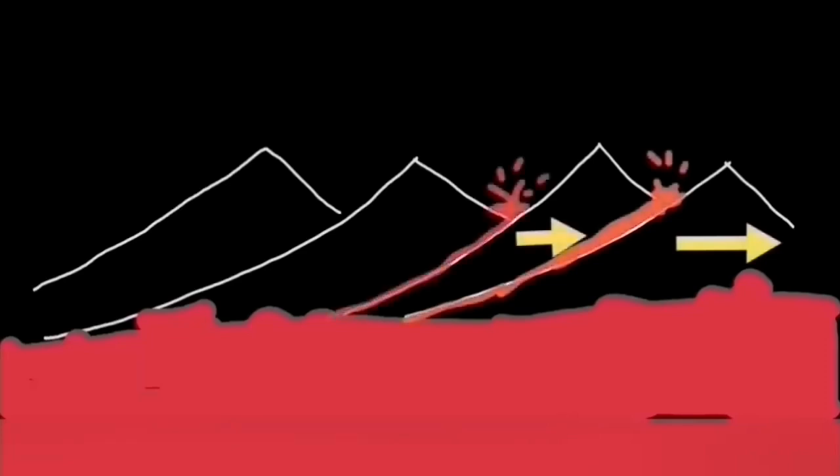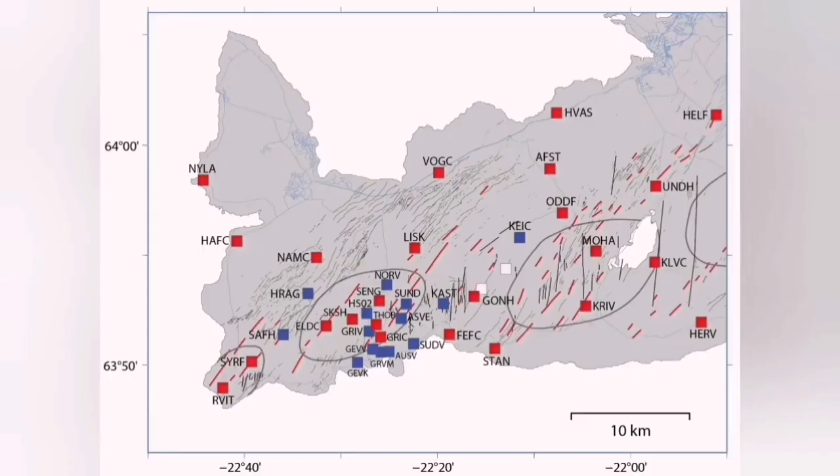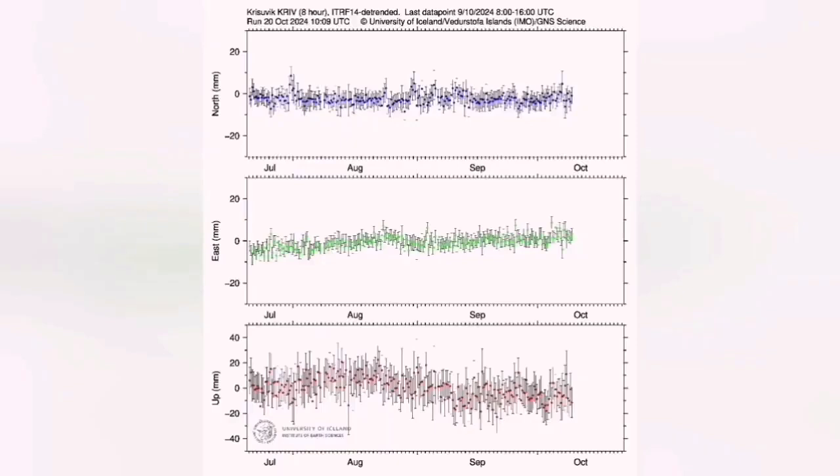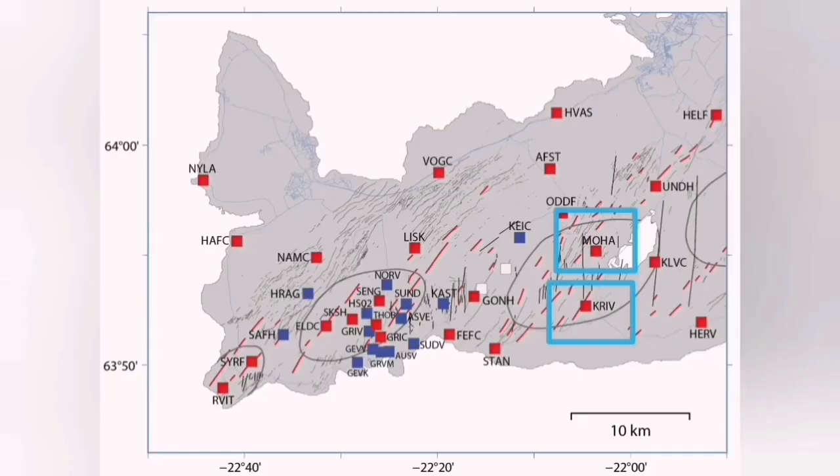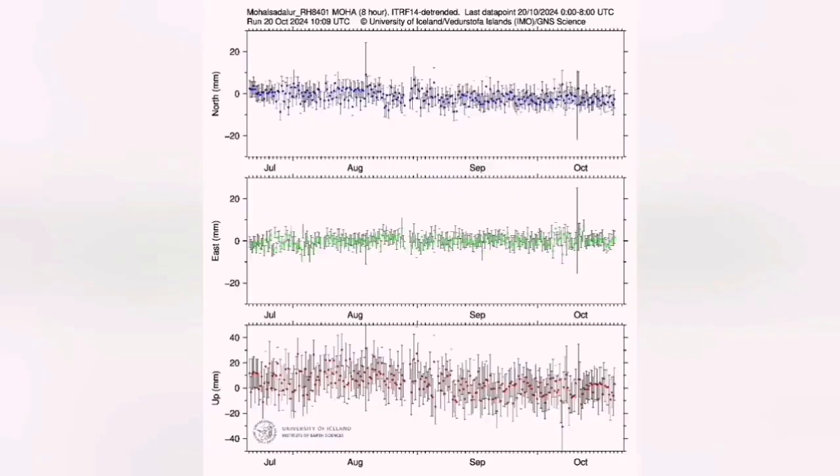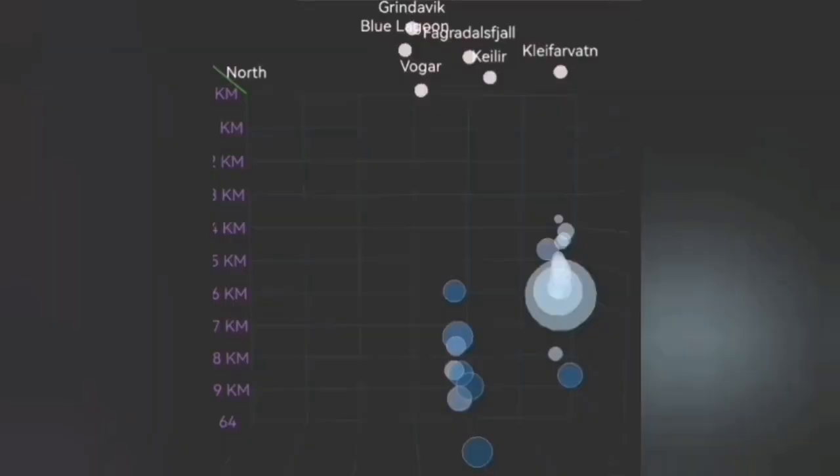We know they are not related to the magma movement because when we look at the GPS data for this area, this is Krýsuvík data, you cannot see any change in the GPS data due to the accumulation or rising of the ground due to the accumulation of magma. The Reykjanes station also doesn't show anything like that. These are the definition of the word tectonic, and this is what we see here: sudden jerky movement which creates rupture and breaking apart of the Earth's crust. That is tectonic.